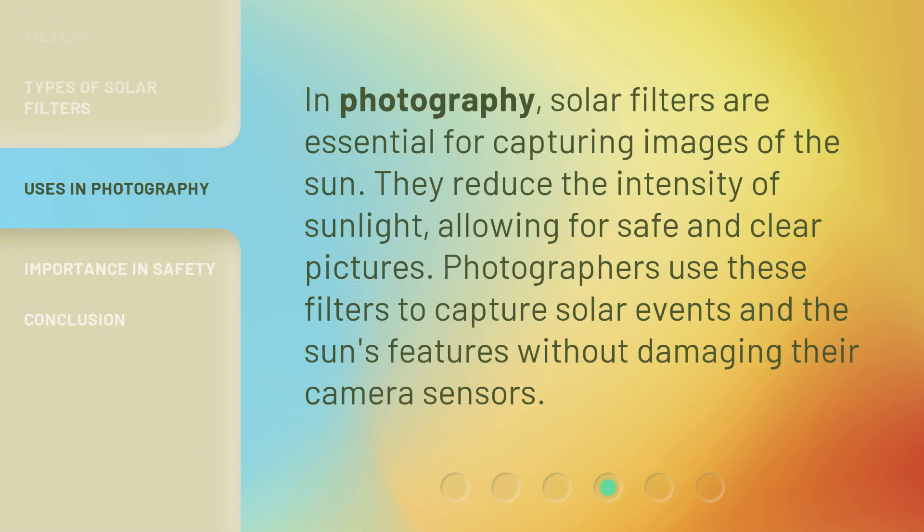In photography, solar filters are essential for capturing images of the sun. They reduce the intensity of sunlight, allowing for safe and clear pictures. Photographers use these filters to capture solar events and the sun's features without damaging their camera sensors.